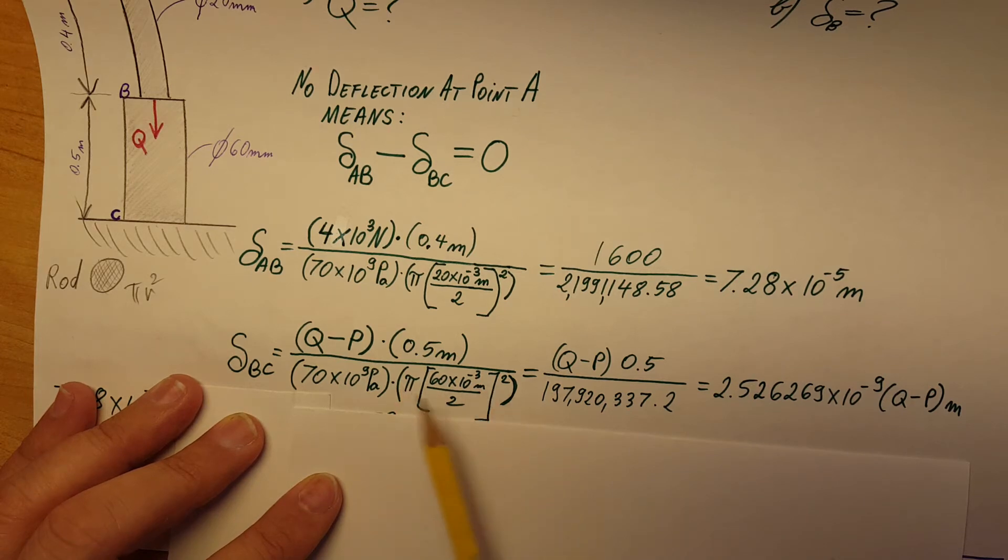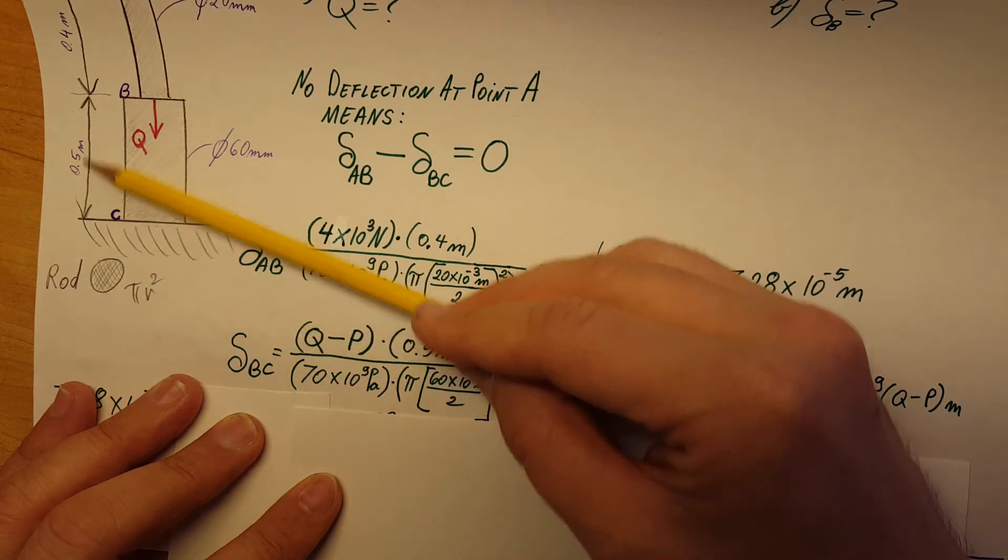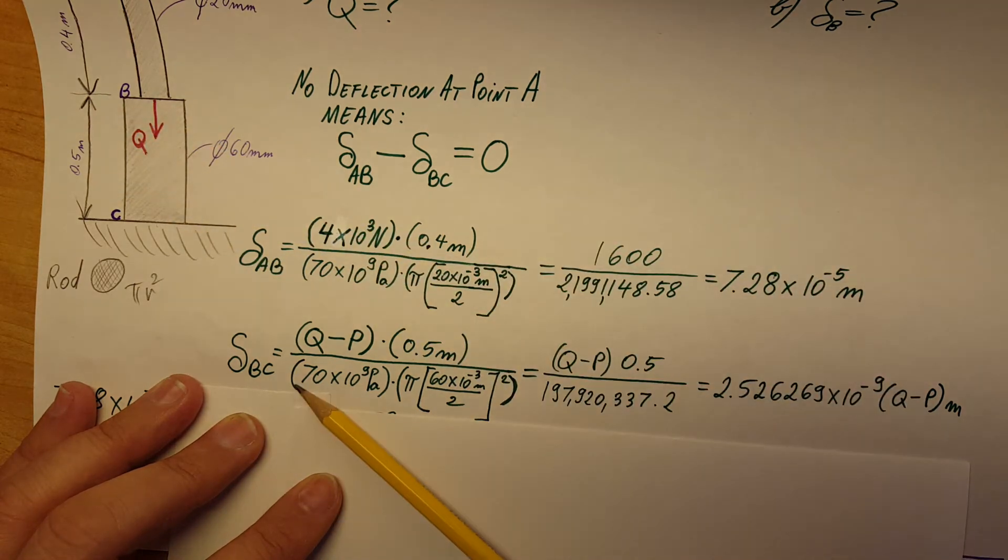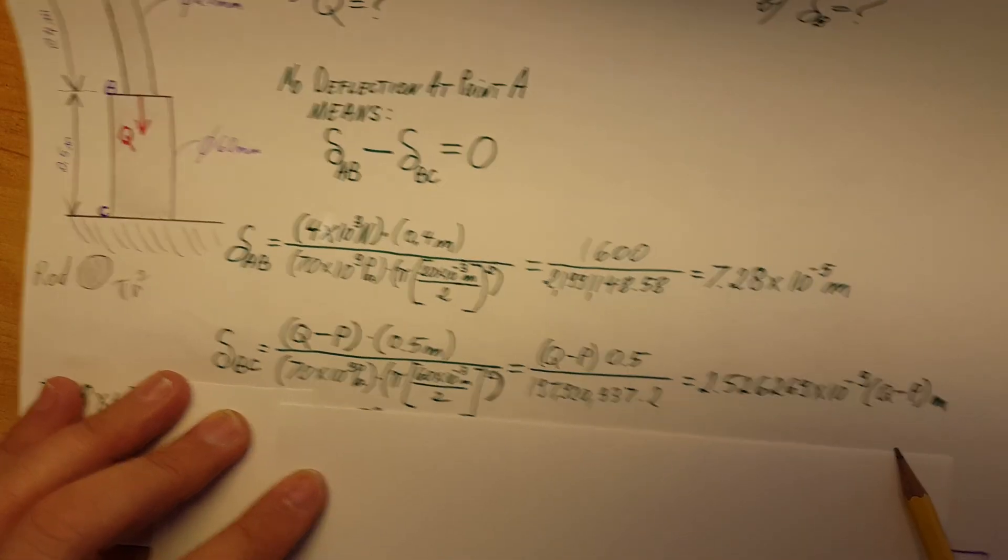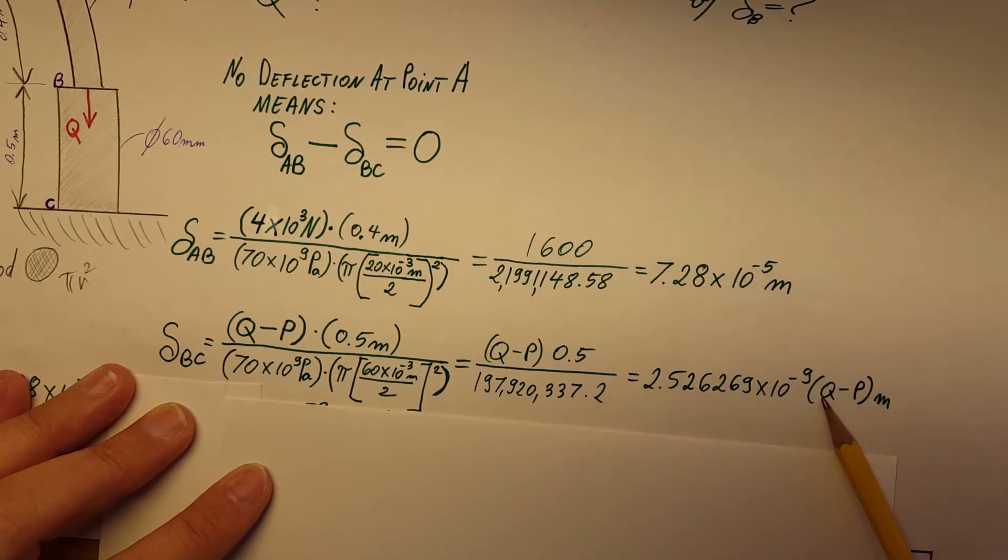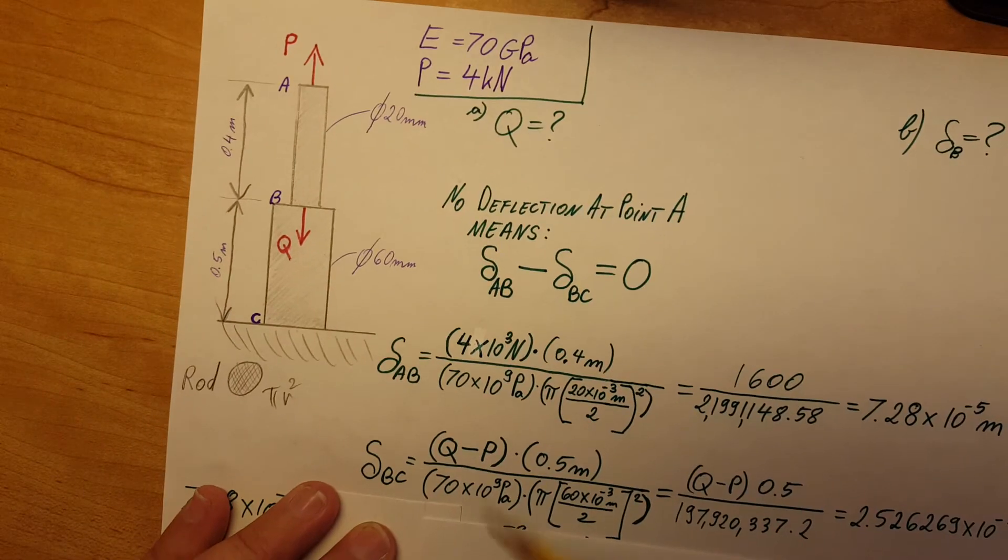Everything else we plug in: the diameter of this cross-sectional circle from the bottom part is 60, divide by 2 to get the radius. Plug in the length, which is 0.5. The E is given. After we plug in, we're gonna get a value, and I'm gonna leave Q minus P as a variable for now.